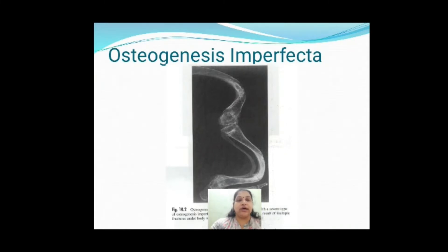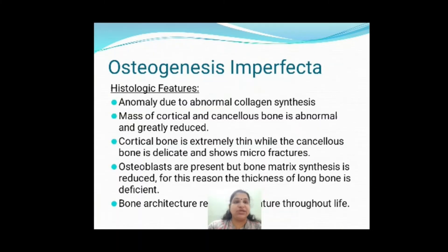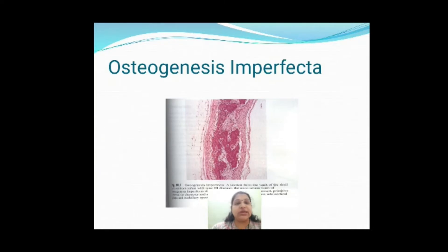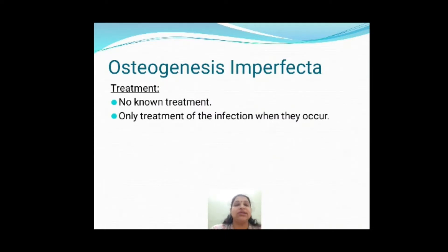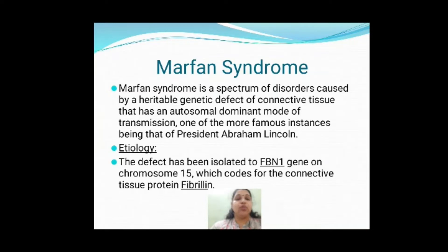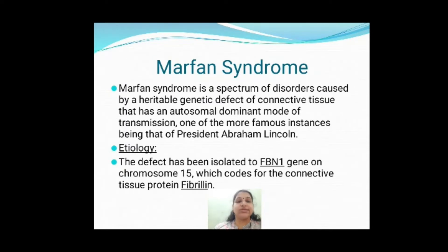Histologically, there is going to be abnormal collagen synthesis and immature bone formation due to abnormality in collagen synthesis. There is no particular treatment for osteogenesis imperfecta. To summarize: there is mutation in COL1A1 and COL1A2 genes, and the main features are bone fragility, blue sclera, dentinogenesis imperfecta, and four types.